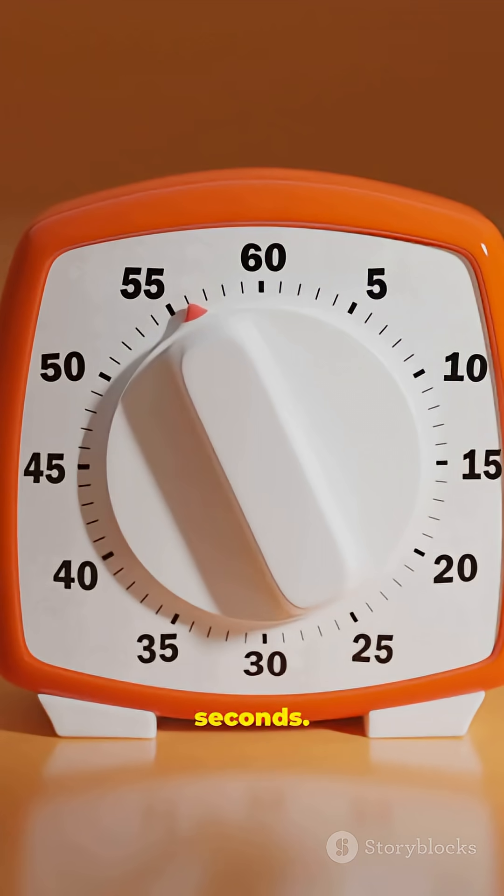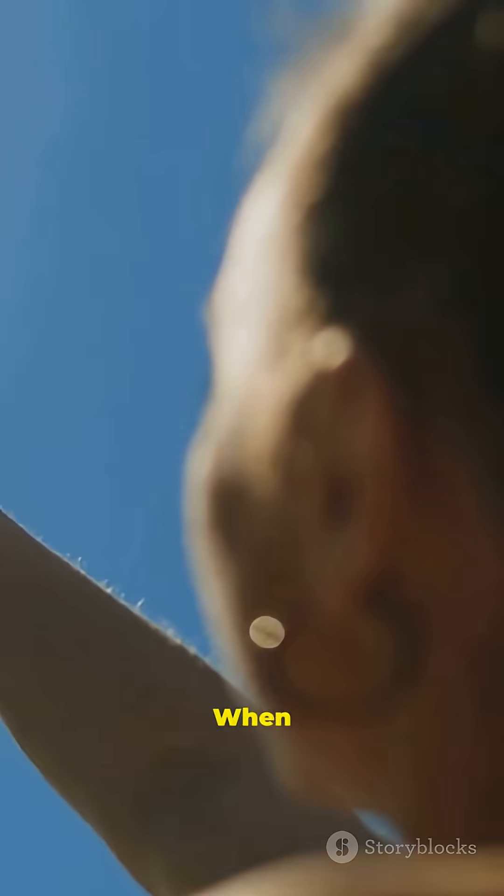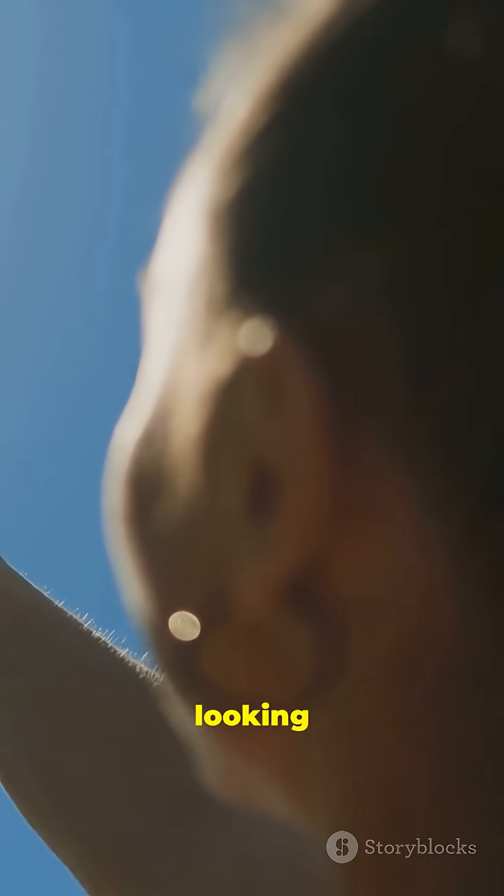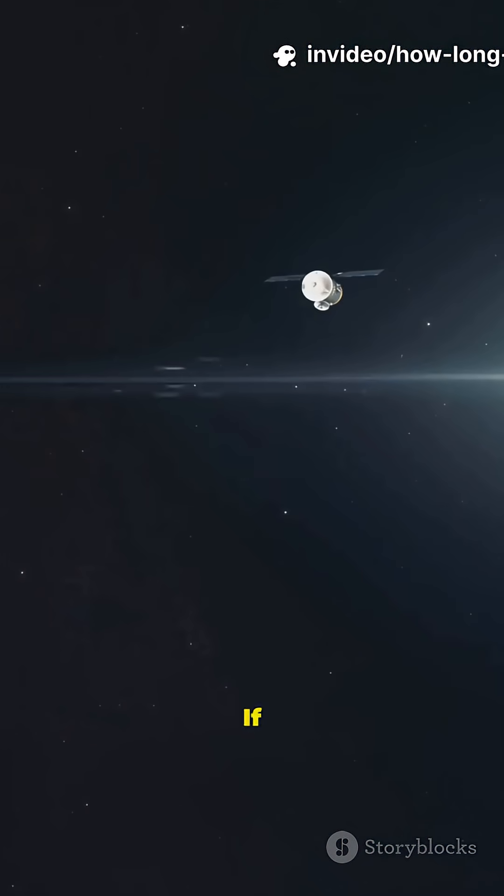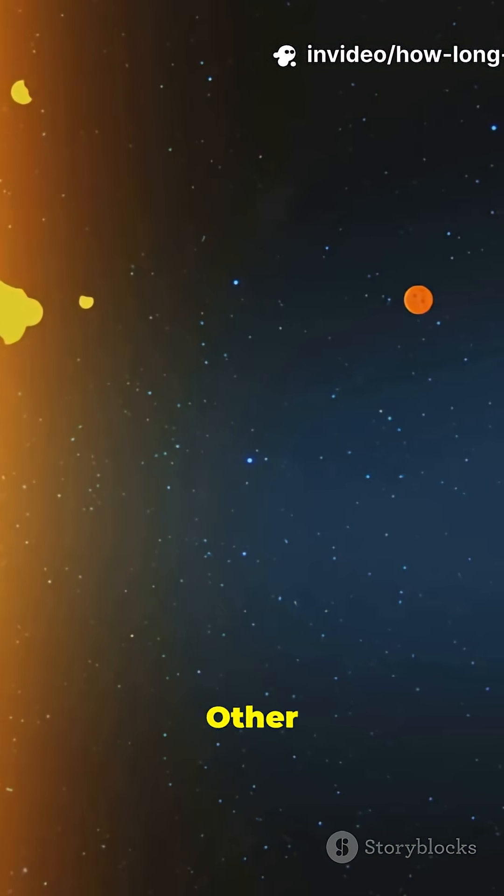500 seconds equals 8 minutes and 20 seconds. What this means: When you see the sun, you're actually looking at it as it was eight minutes ago. If the sun suddenly disappeared, hypothetically we wouldn't know for over eight minutes.